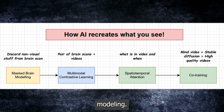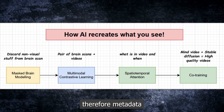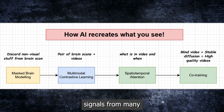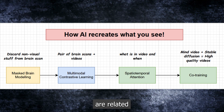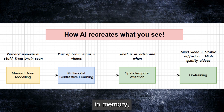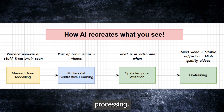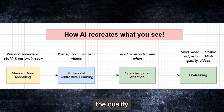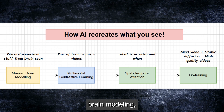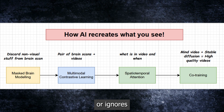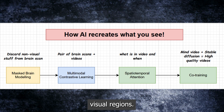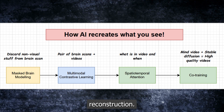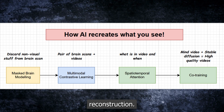Masked brain modeling is responsible for pre-processing the fMRI data and removing irrelevant information. The data contains signals from many brain regions, but not all of them are related to vision. For example, some regions may be involved in memory, emotion, or language processing. These regions may interfere with the video reconstruction and misguide the model while it is being trained. So masked brain modeling masks out or ignores the non-visual regions of the brain and only focuses on the visual regions, allowing the model to concentrate on the most relevant information for vision reconstruction.